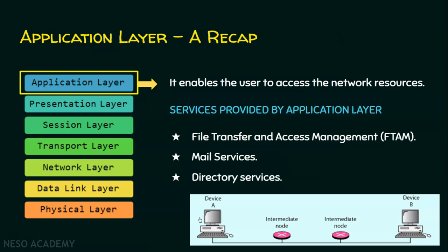Application layer: when a user wants to interact with the computer network, he opens an application and interacts with it, or uses the network for doing some activities. So it enables the user to access network resources through applications. The services offered by the application layer are file transfer and access management, mail services, and directory services. The application layer is the one that directly interacts with the user.